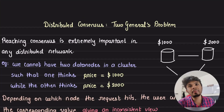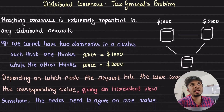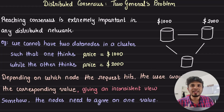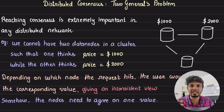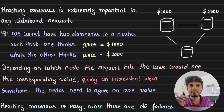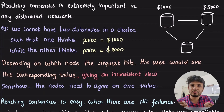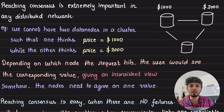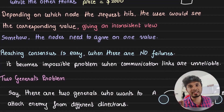Reaching consensus is extremely important in a distributed network. For example, if we have a database cluster in which one node thinks the value of price is $1,000 while the second node thinks it is $2,000, then when someone queries the database, depending on where the request goes, the user would see either $1,000 or $2,000 — an inconsistent view. What we need is for the distributed database to come to a consensus on the true value. This is the classic problem of reaching distributed consensus.